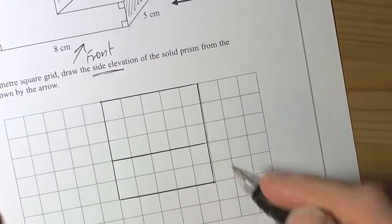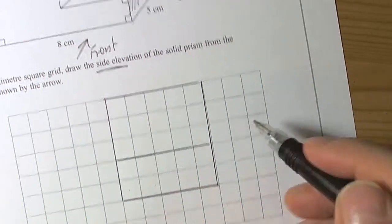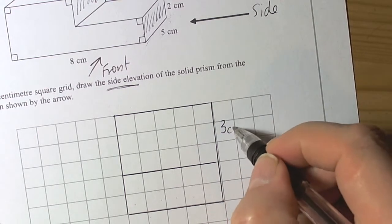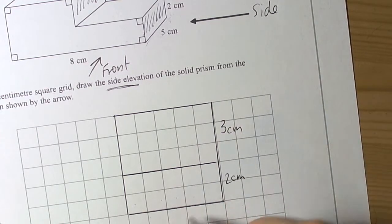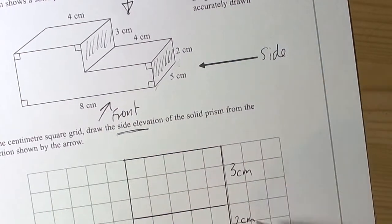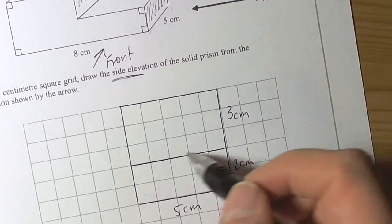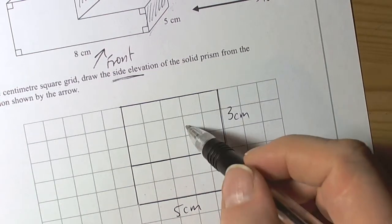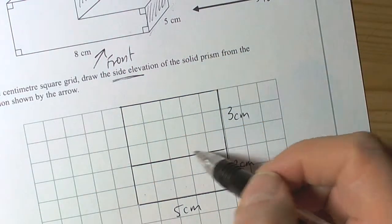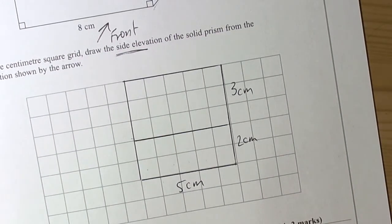That would then be the correct answer for this question. This could have been anywhere on this grid as long as it had these sizes—where that was three centimeters, that was two centimeters, and this was five centimeters. Looking from the side view again, we have to make sure we've got this line in the boundary here because there are two distinct rectangles that you would see, and there's a split here. Plans, side, and front elevations.